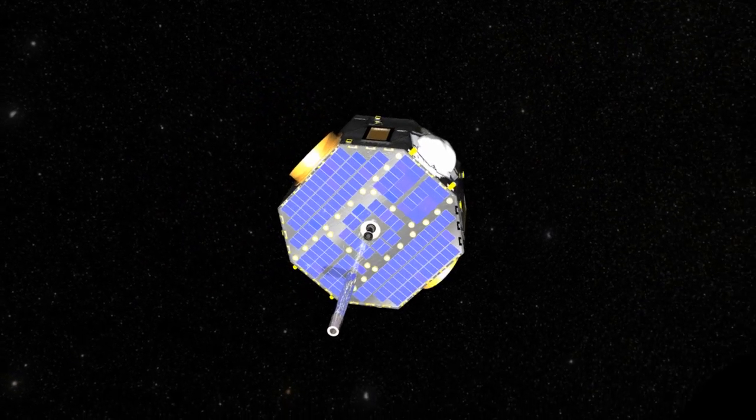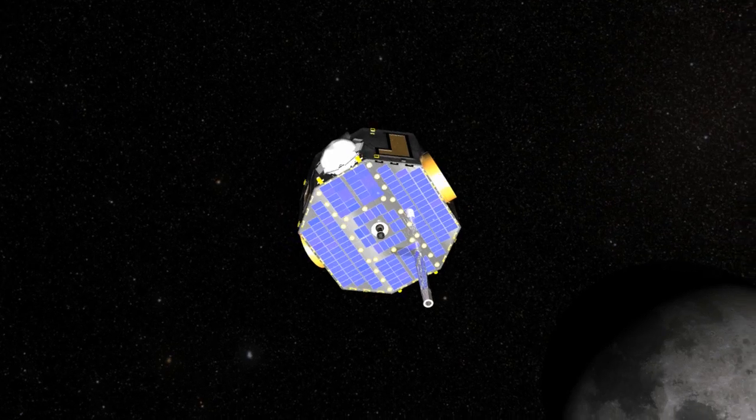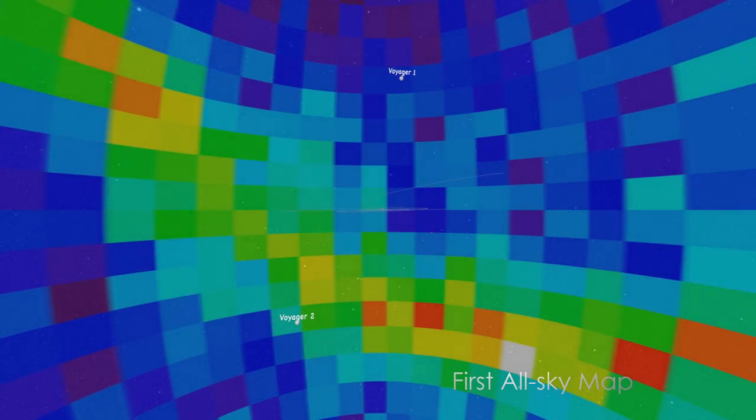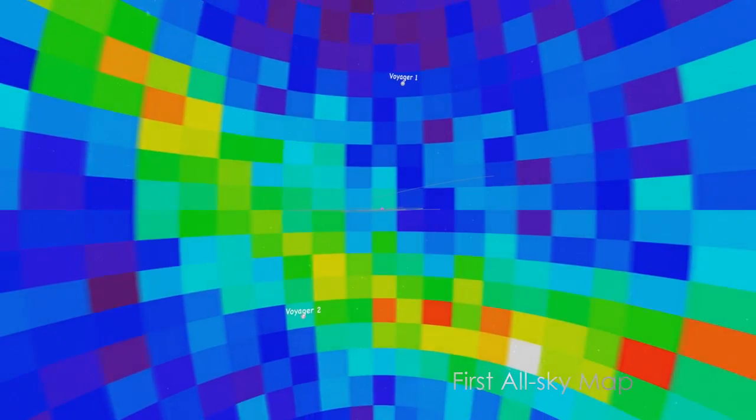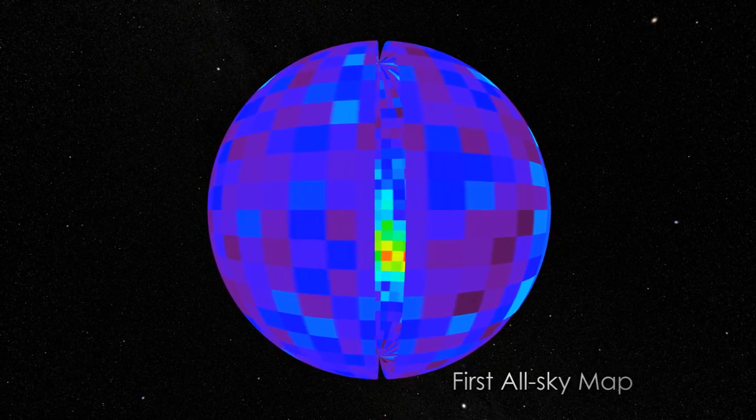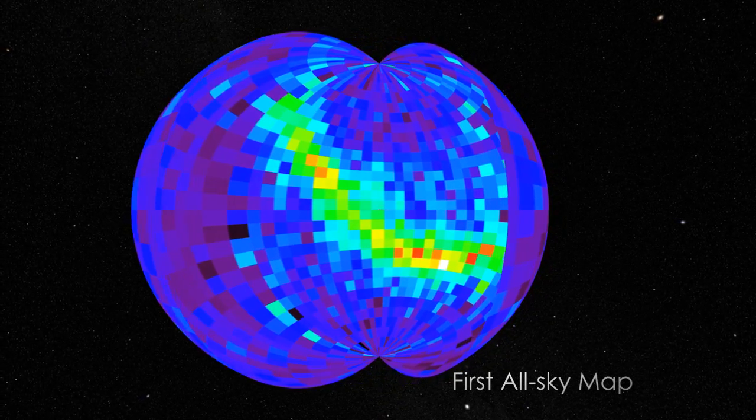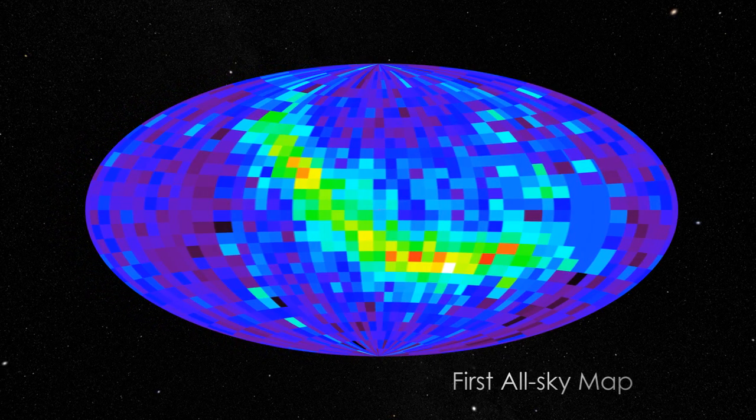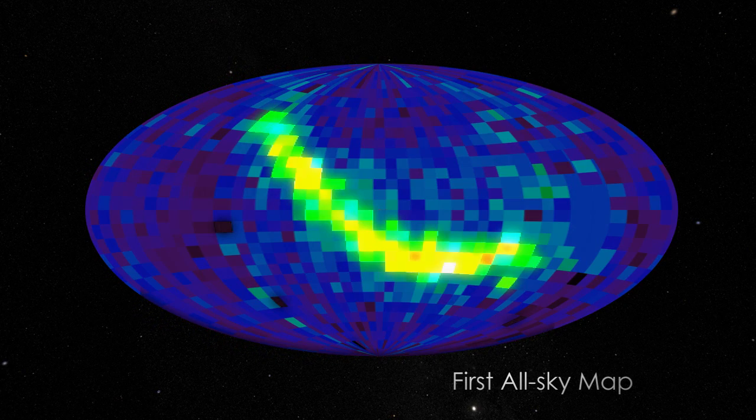During its first five years, IBEX has made some astounding discoveries. The IBEX mission science team has used data from the spacecraft to construct the first-ever all-sky map of the interactions occurring at the edge of the solar system, where the sun's influence diminishes and interacts with the interstellar medium. The most startling finding is a bright ribbon of energetic neutral atoms emanating toward the sun from the edge of the solar system.